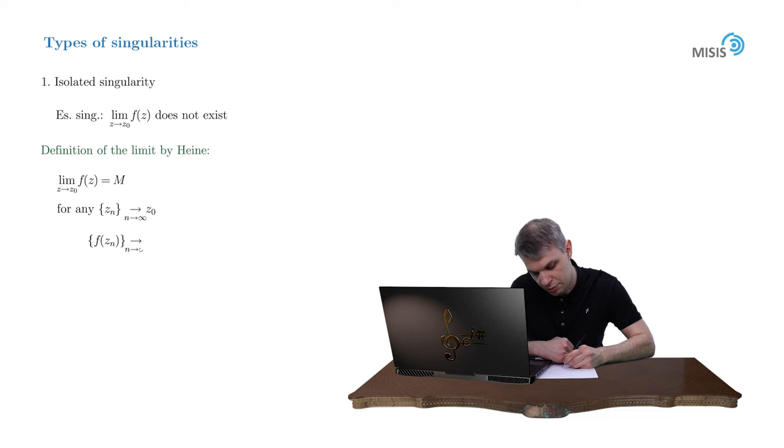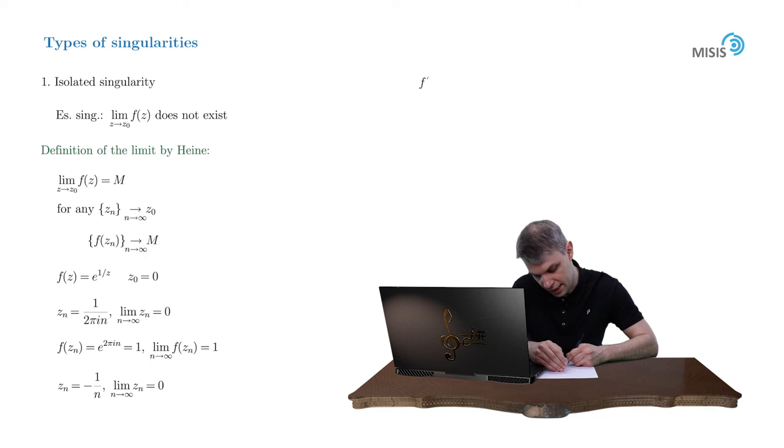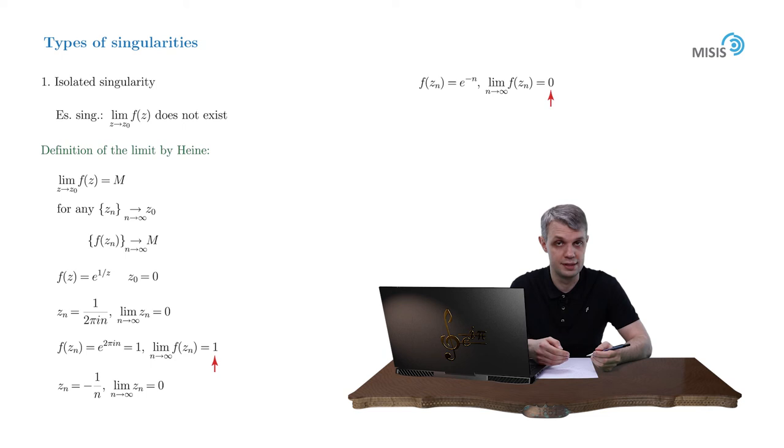Let's see how this works for our classical example, the exponential to the power of 1/z. So z0 = 0. Let's devise a sequence z_n = 1/(2πin). As n tends to infinity, z_n tends to 0. Then f(z_n) = e^{2πin}, so it's always equal to 1 and the corresponding limit is 1. Now let's try a different sequence: z_n = -1/n. As n tends to plus infinity, again z_n tends to 0. But f(z_n) will be equal to the exponential to the power of negative n, and it tends to 0 as n tends to plus infinity. So we have two different limits, and that means the limit does not exist and we face an essential singularity.